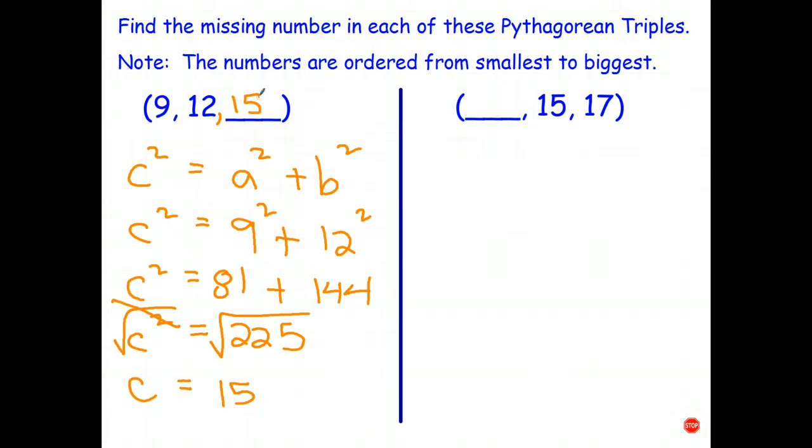In the second one, what we're missing is the value for a. So we start the same way as before. c² = a² + b². c we know is 17. a is what I don't know. b is equal to 15.